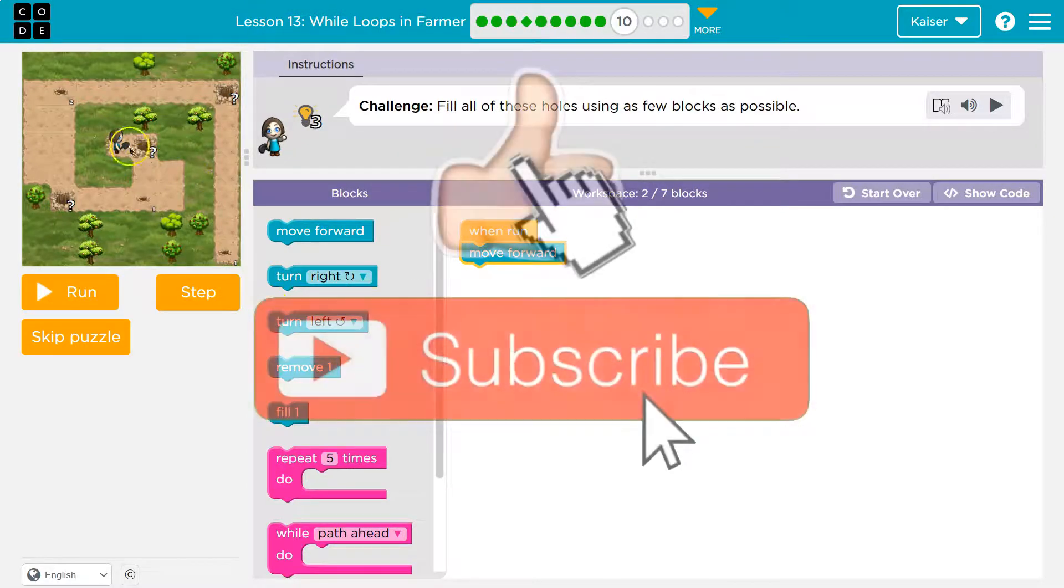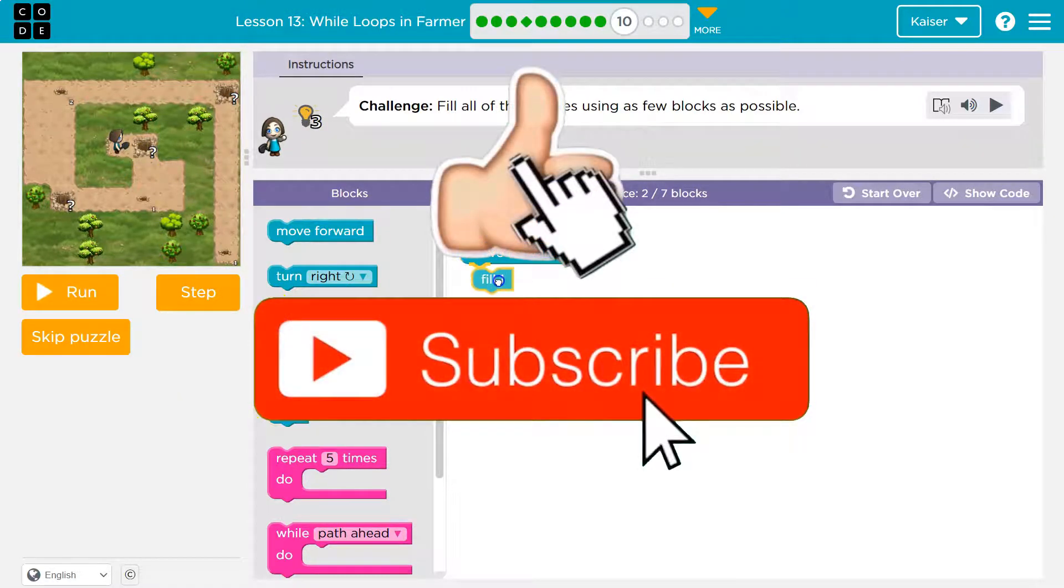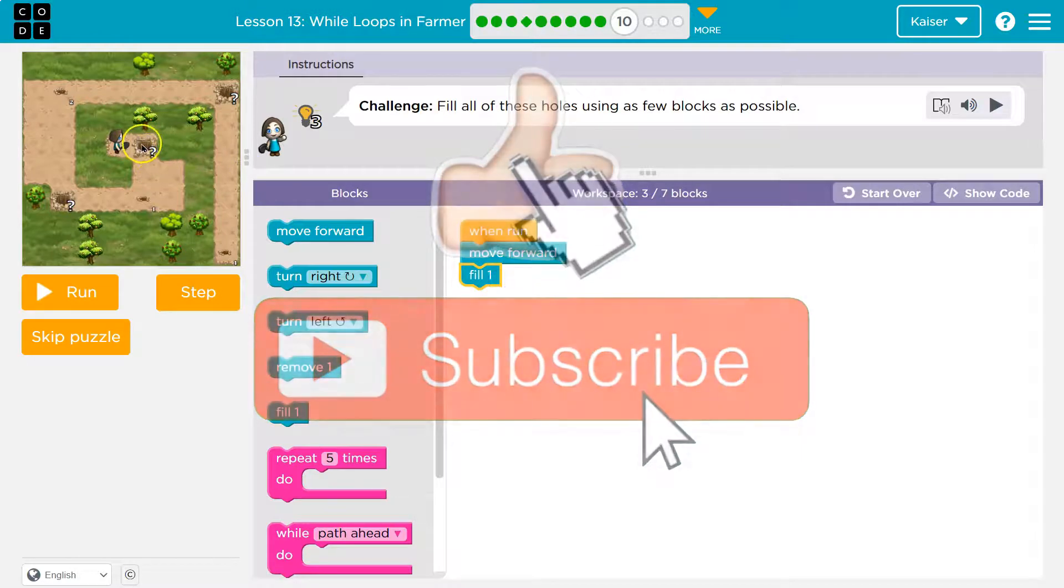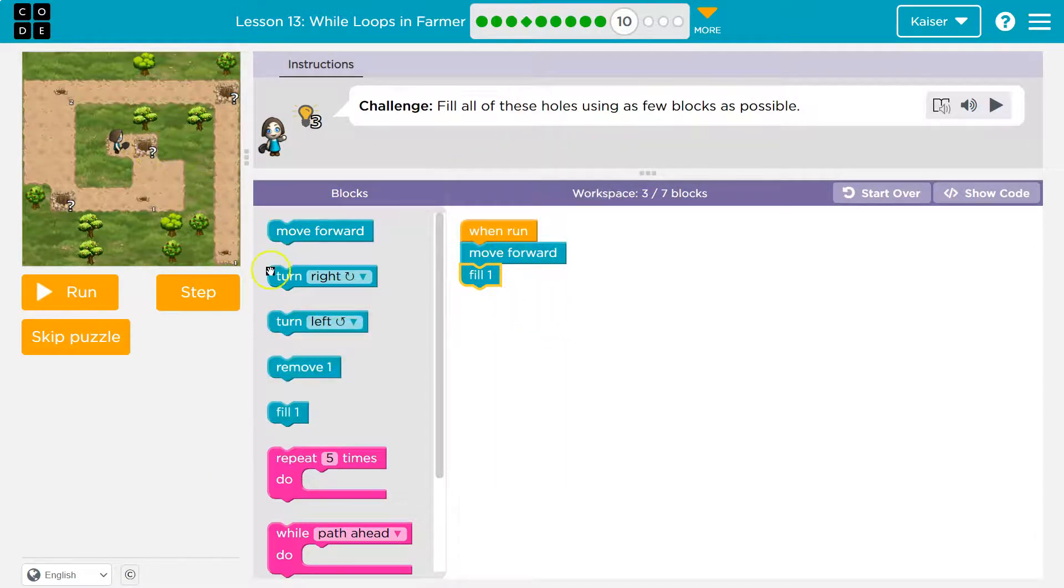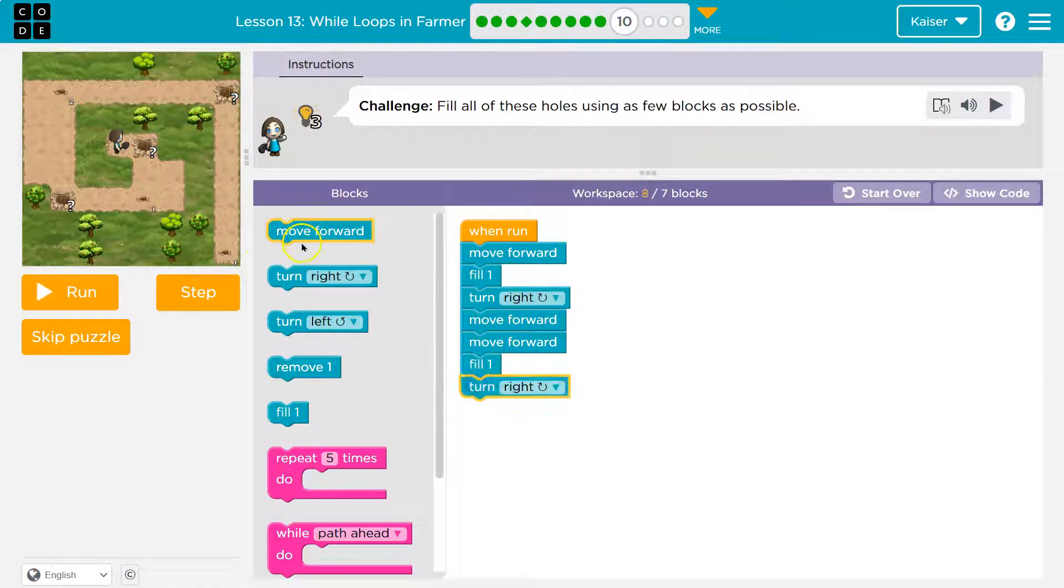I'll move forward first, and then I guess I need to fill that hole. Ooh, that's tricky. We don't know how many times, though. I'll do it once and see. Then turn right, I guess. And move forward, and move forward, I think. And then I need to fill a hole. And notice how fast I'm going. That's because I'm just testing here. I'm not worried about being wrong, or right, or whatever. Let's see what this does.